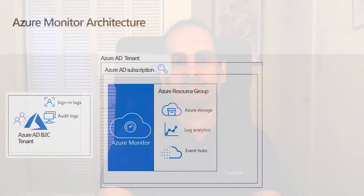Let's go through the steps required to configure the Delegated Resource Management. First, you begin by creating or choosing an existing resource group in the Azure Active Directory tenant that contains your Azure subscription. This resource group contains the Azure Monitor resources, including Azure Storage Account, Log Analytics Workspace, and Azure Event Hubs. You can use all the services or just one of them, depending on your needs.